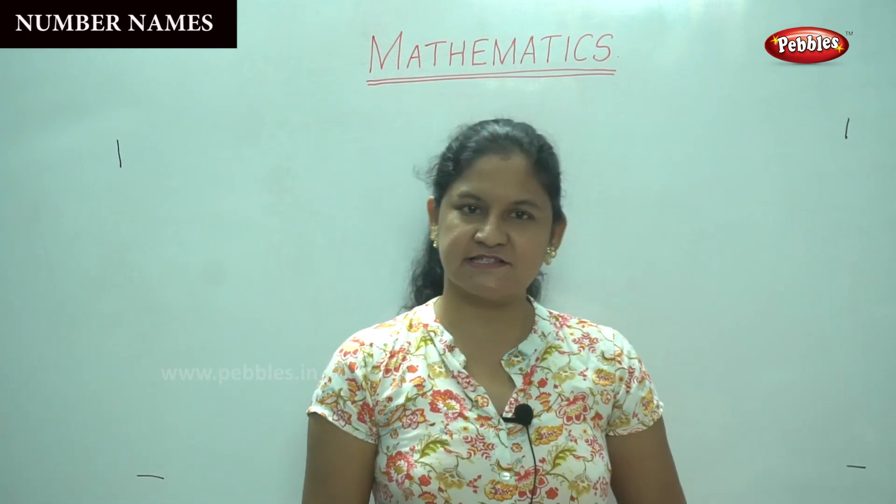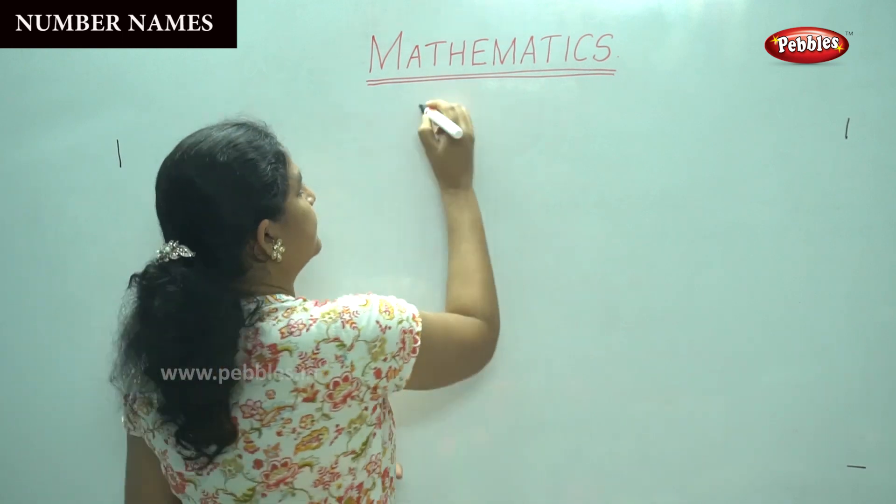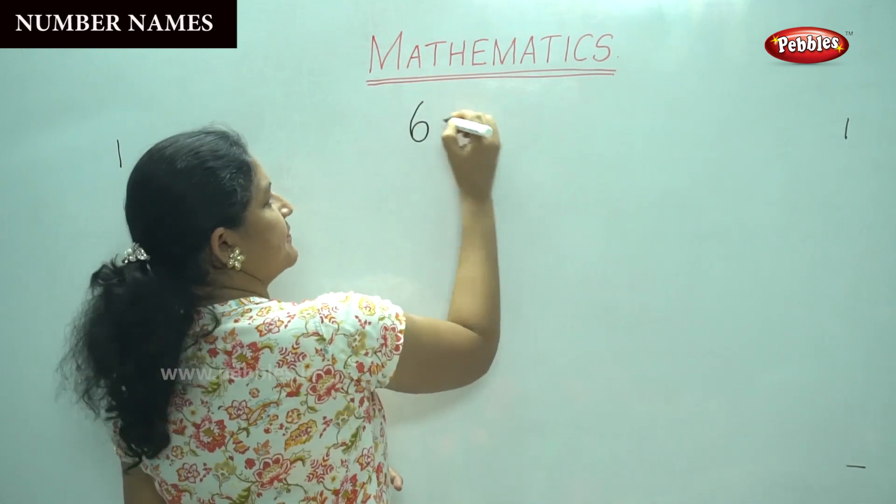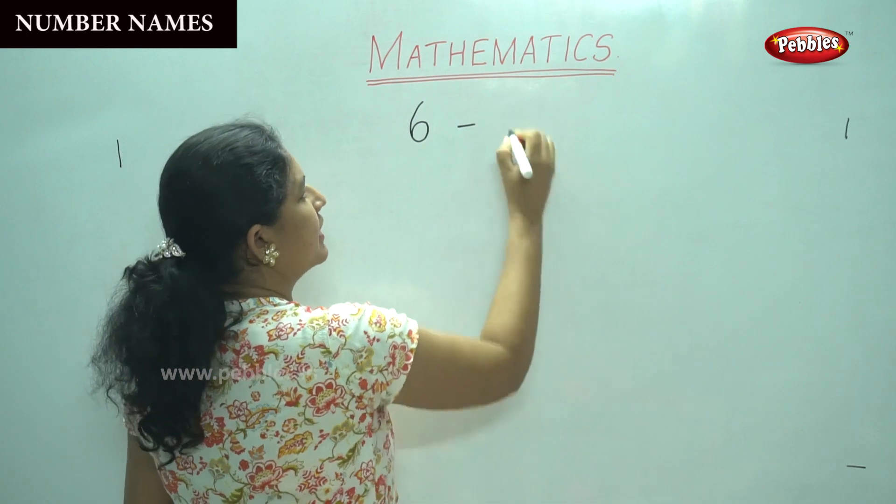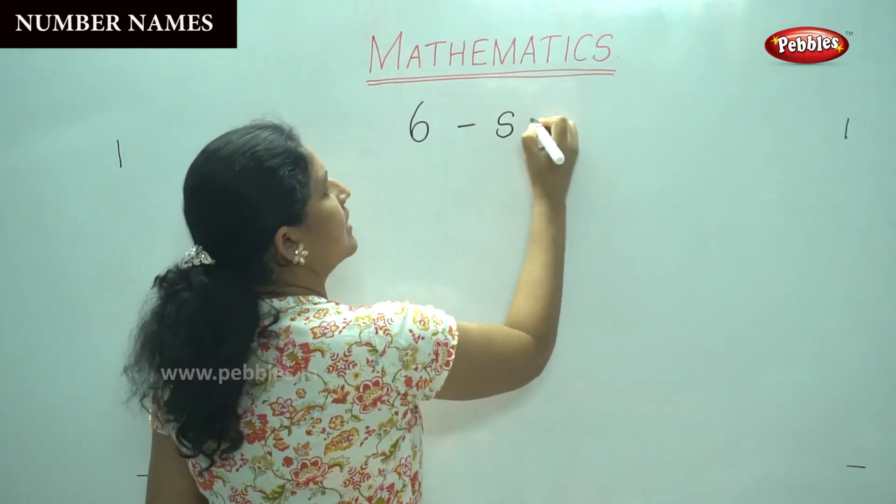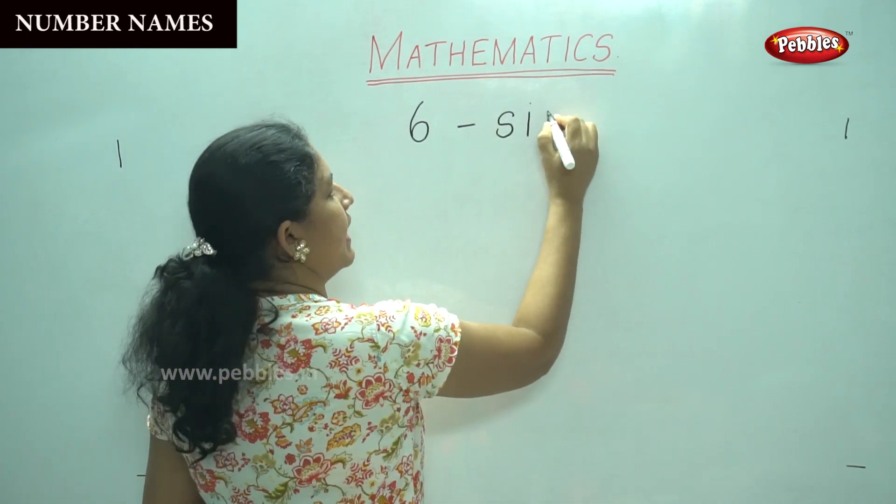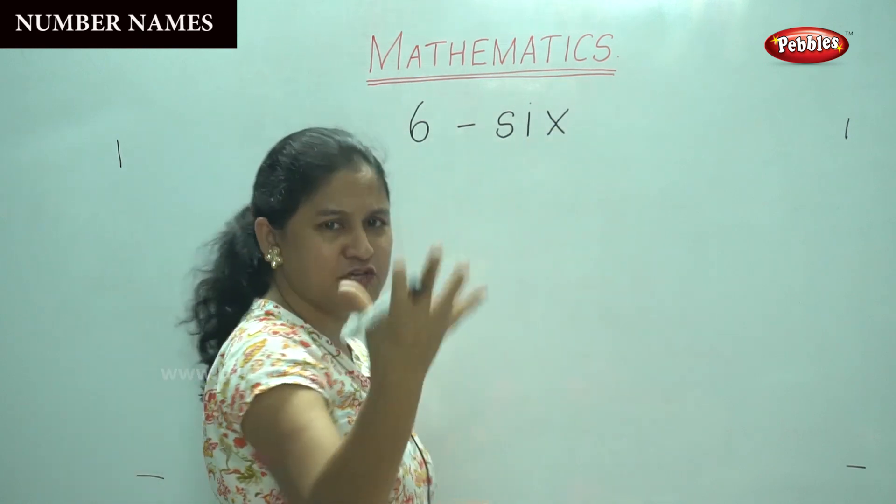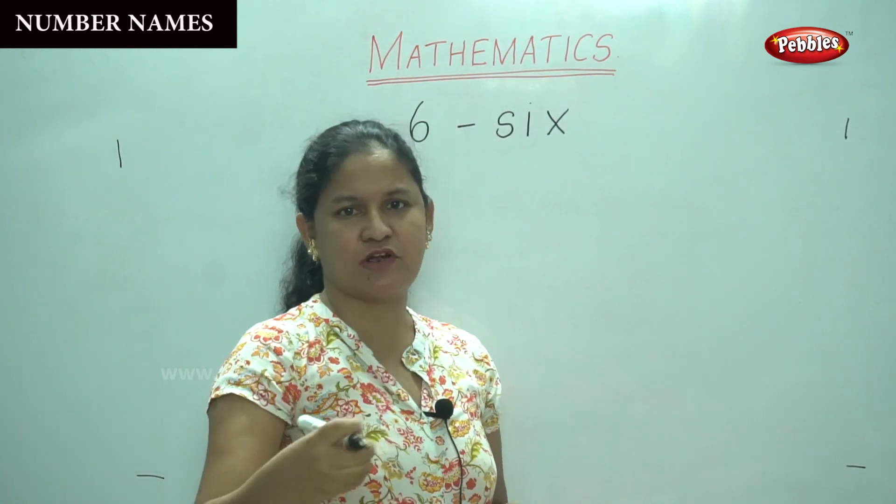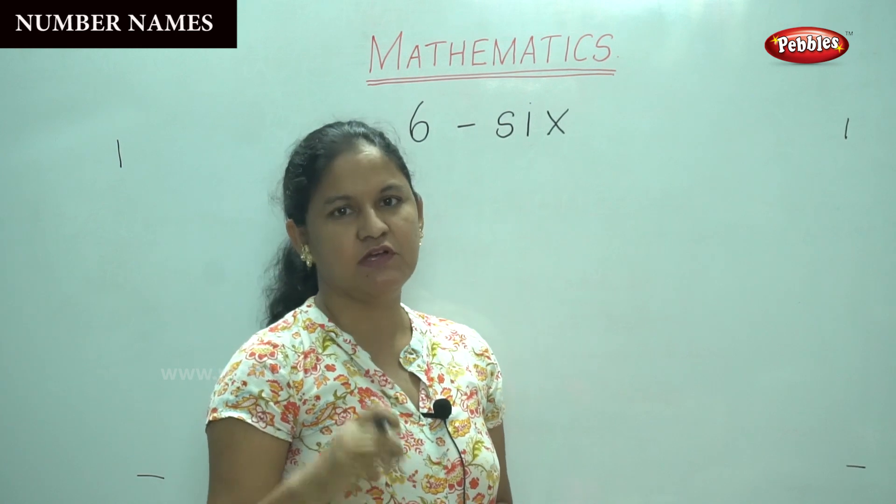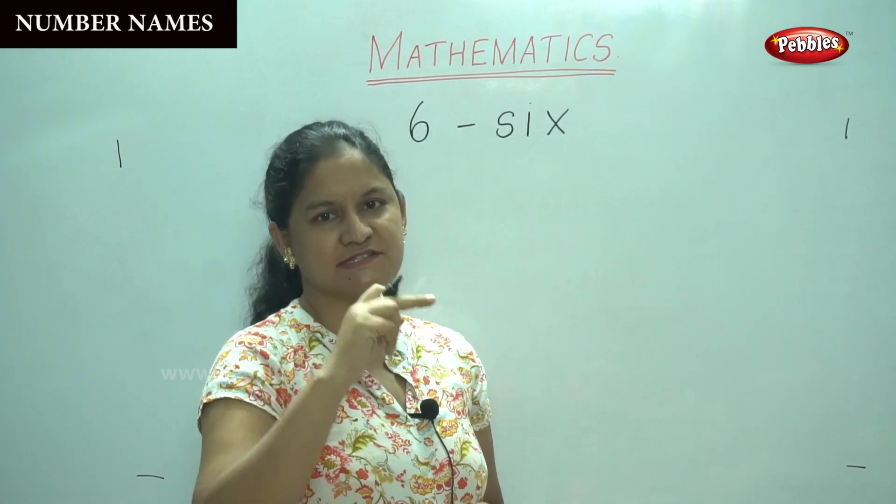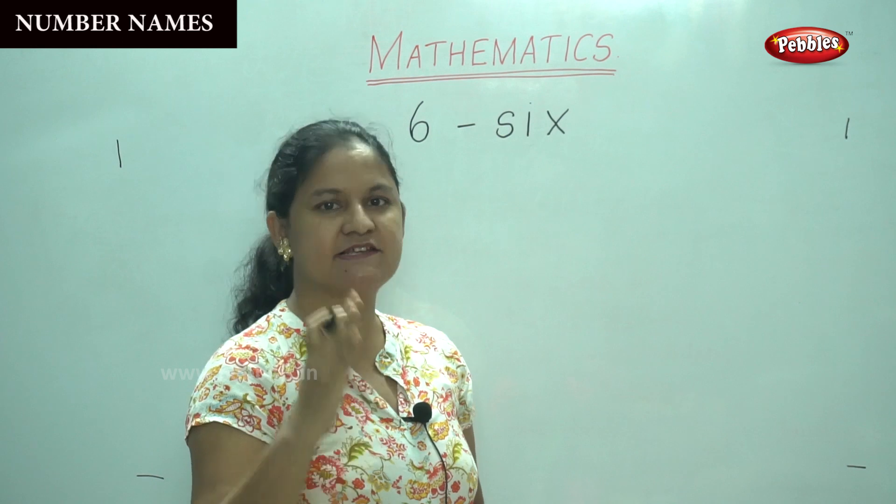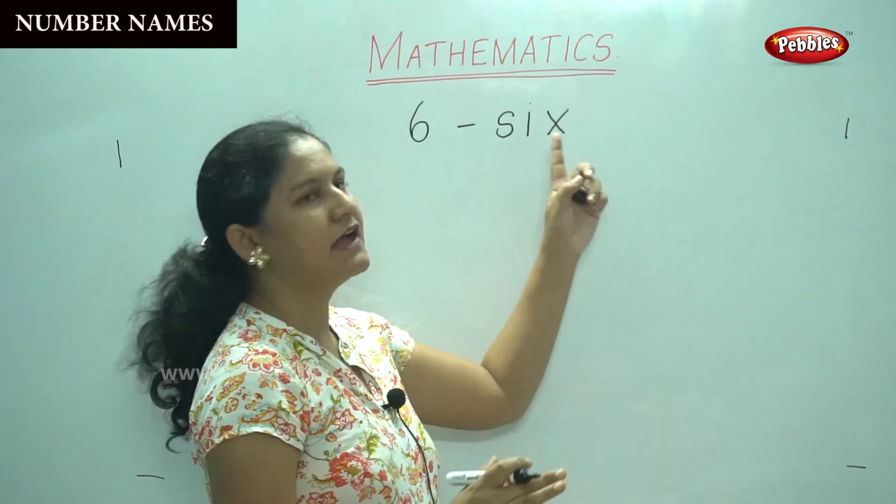So the next number will be number 6. So shall we see the spelling for number 6 children? S-I-X. So I would like you to say it as you write so that it will be more easy for you. So when you write the number 6, you will say the spelling. It is S-I-X.